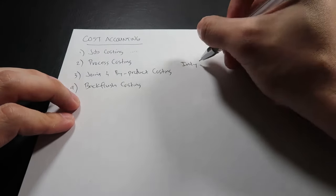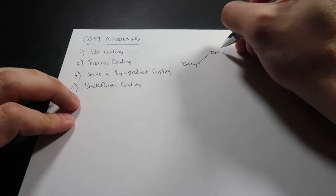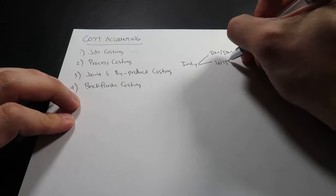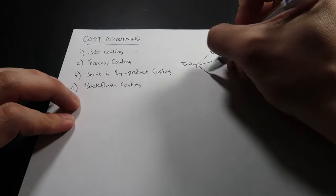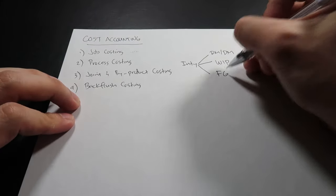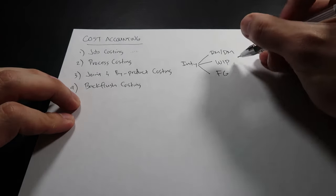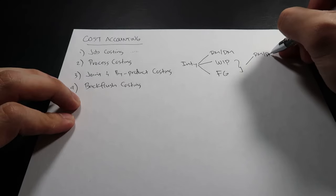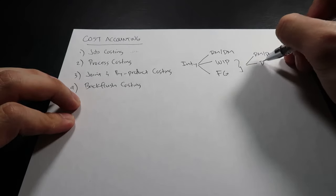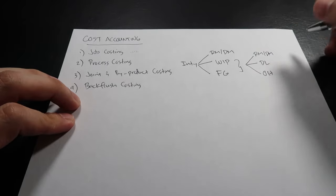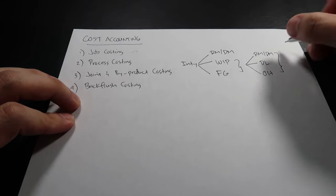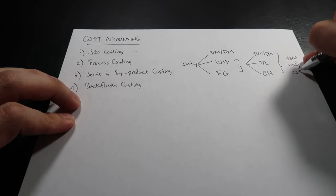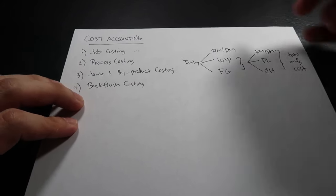Just to recap, a manufacturing company has three types of inventory: number one is raw materials, also called direct materials; second is work in process or WIP; and third is finished goods or FG. WIP and FG are composed of raw materials, direct labor, and overhead.